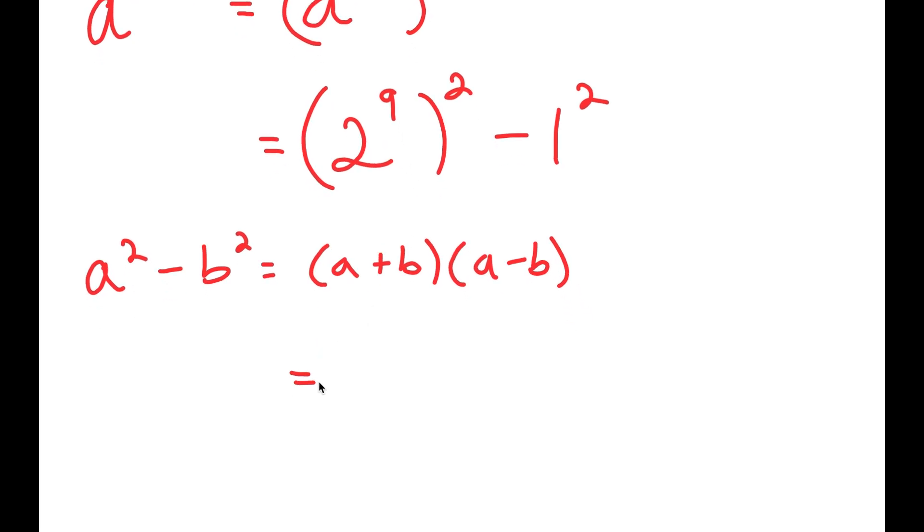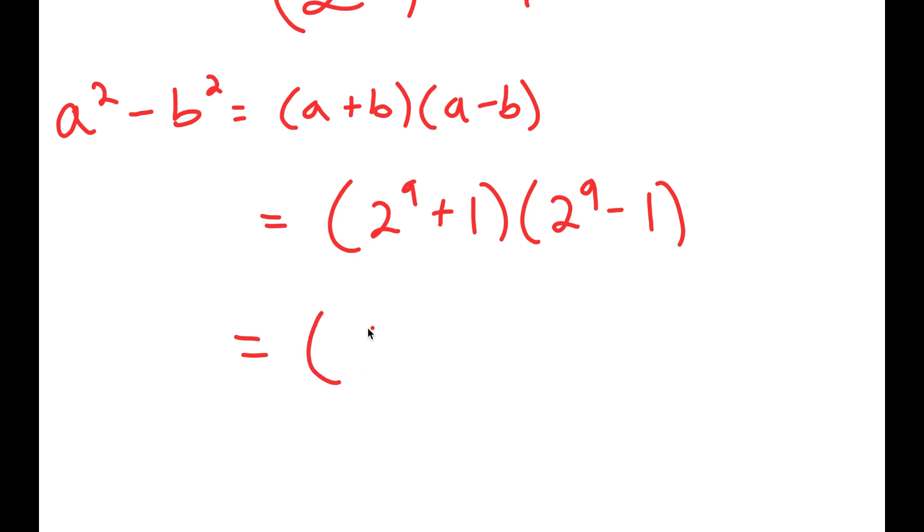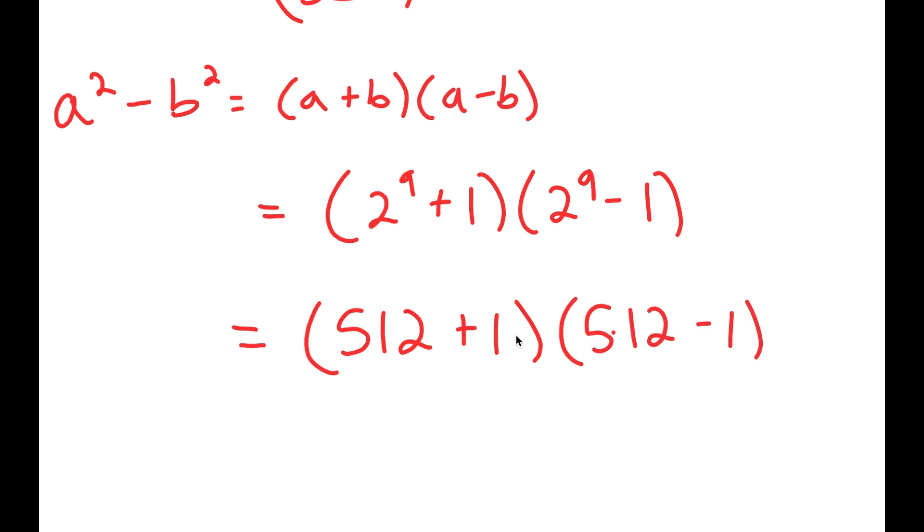So in this case, this is going to turn into 2 to the power of 9 plus 1 times 2 to the power of 9 minus 1. And 2 to the power of 9 is equal to 512. So I get 512 plus 1 times 512 minus 1, which turns into 513 times 511.